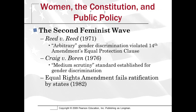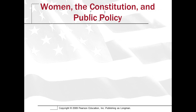In Craig v. Boren in 1976, the Court created the intermediate scrutiny standard for gender discrimination. It is easier to justify a law based on gender discrimination than on racial discrimination, but harder to justify than laws involving other types of discrimination. And so in 1982, the Equal Rights Amendment fell one state short of ratification.